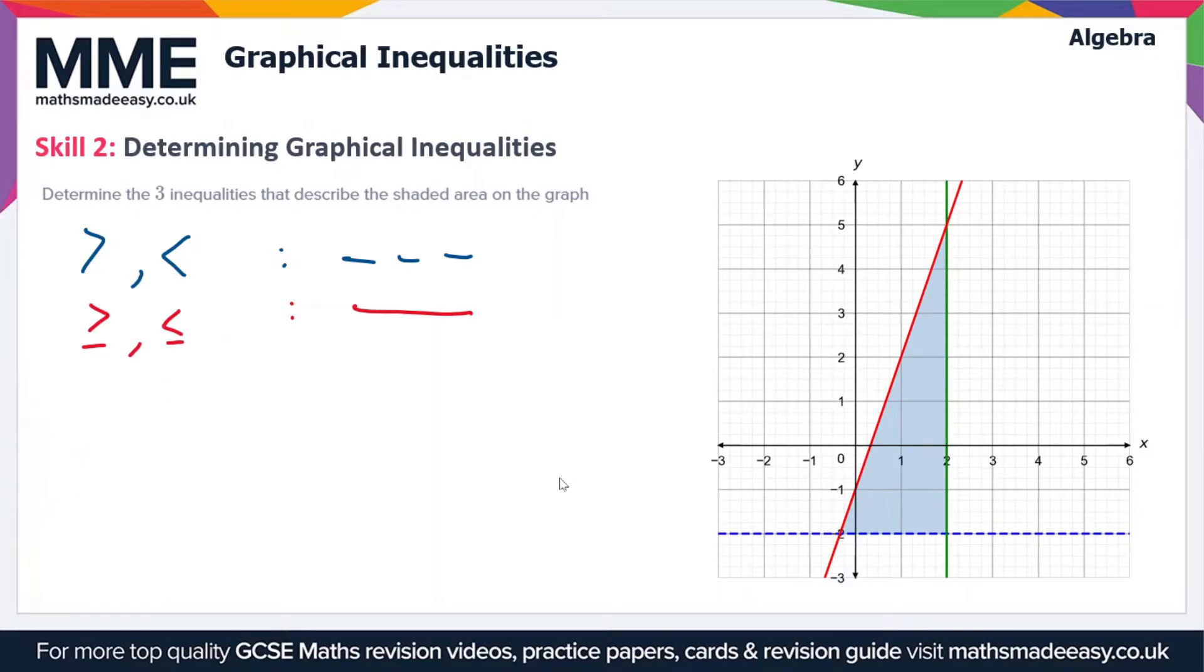Now we need to recognize what these three lines on the graph are. Let's look at the first one in red. The red line has a gradient of three, meaning for every one square it goes across, it goes up three squares. It crosses the y-axis at minus one, so the equation of the line is y = 3x - 1.